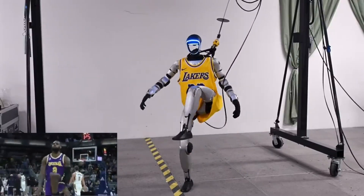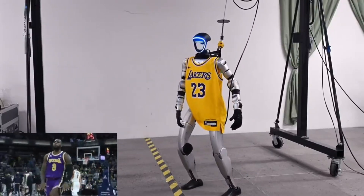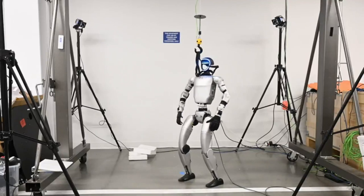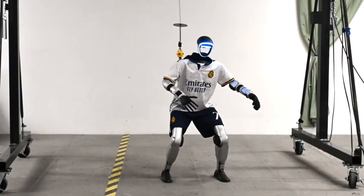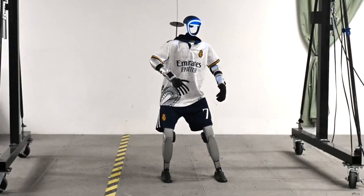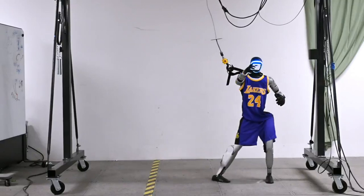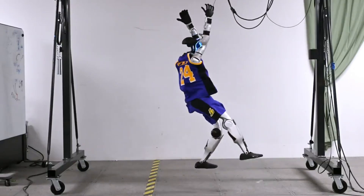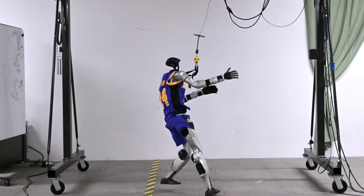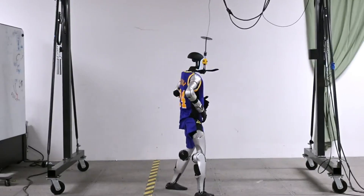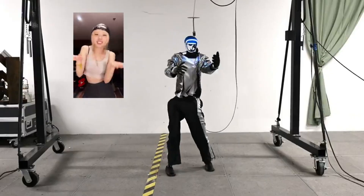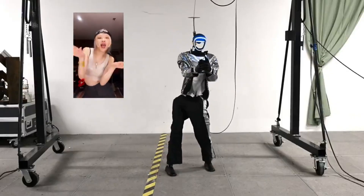Humanoid robots have the potential to perform incredible human-like tasks, but there's one big hurdle: achieving agile, coordinated, whole-body motions that truly mimic how humans move. This challenge is rooted in the mismatch between how simulations behave and the realities of real-world physics. Let's take a closer look at how ASAP is overcoming these challenges and enabling more agile humanoid robots.